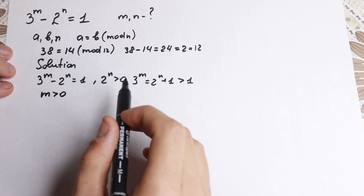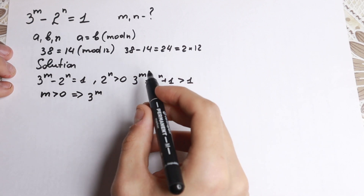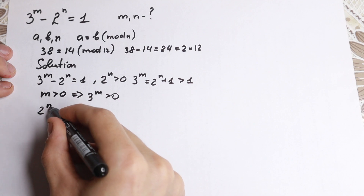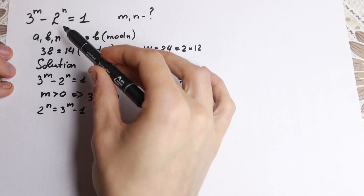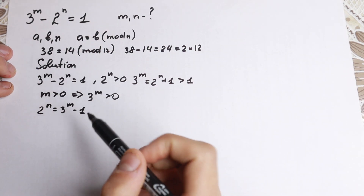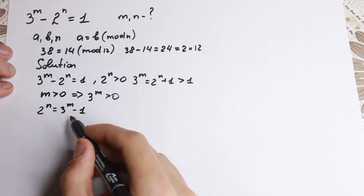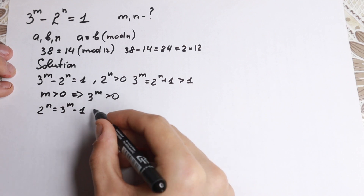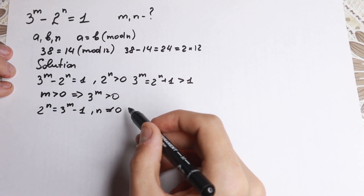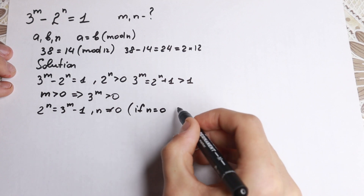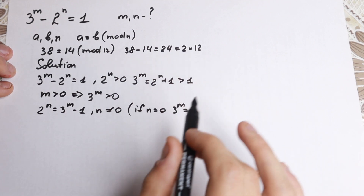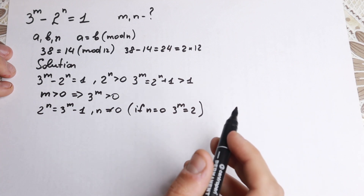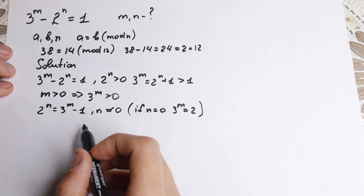So m is a positive integer, and 3 to the m is also a positive integer. So 2 to the n equals 3 to the m minus 1. If we rearrange, this is an integer, so n has to be a non-negative integer. A negative power of 2 is a proper fraction. Moreover, n is not equal to 0 — if n equals 0, we would have 3 to the m equals 2, which is absolutely impossible. So both m and n are positive integers. This is the first step.